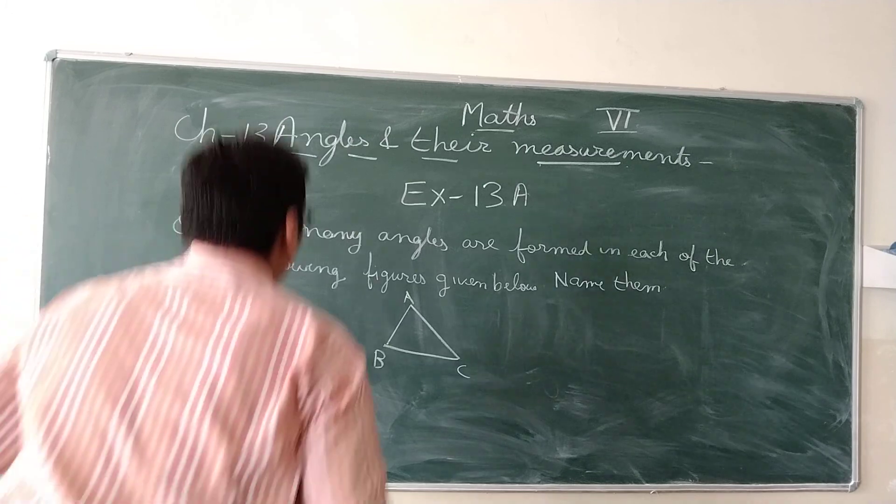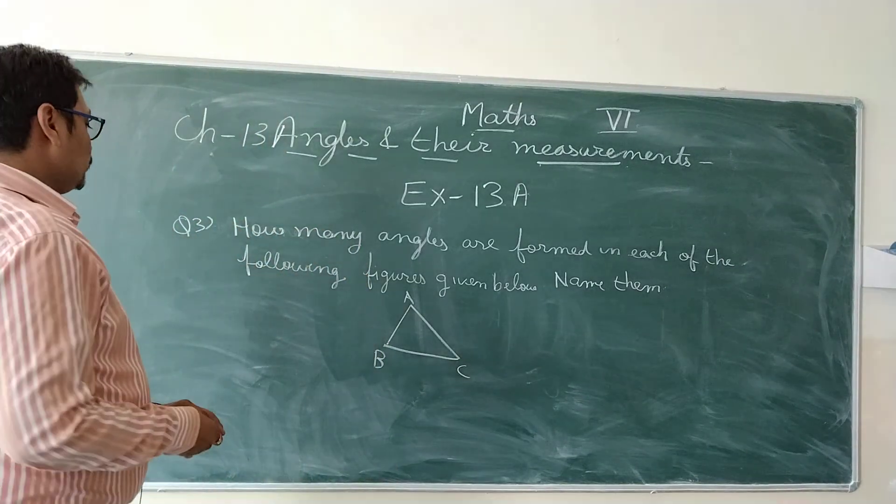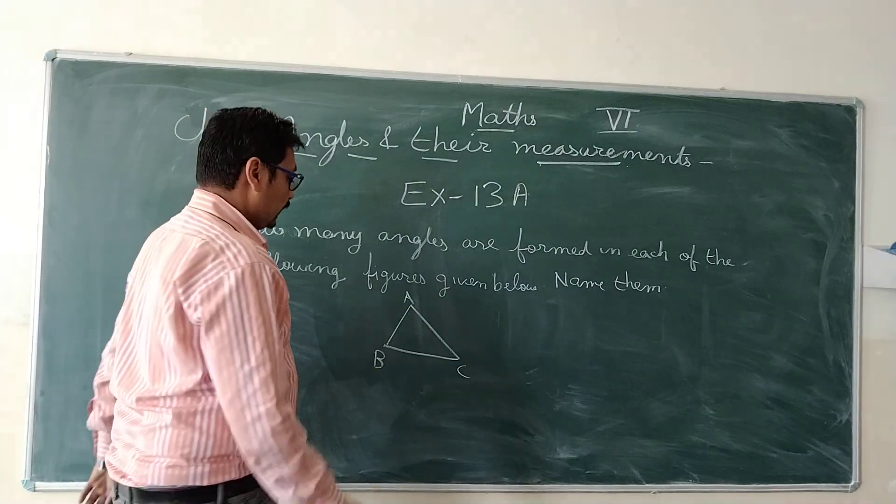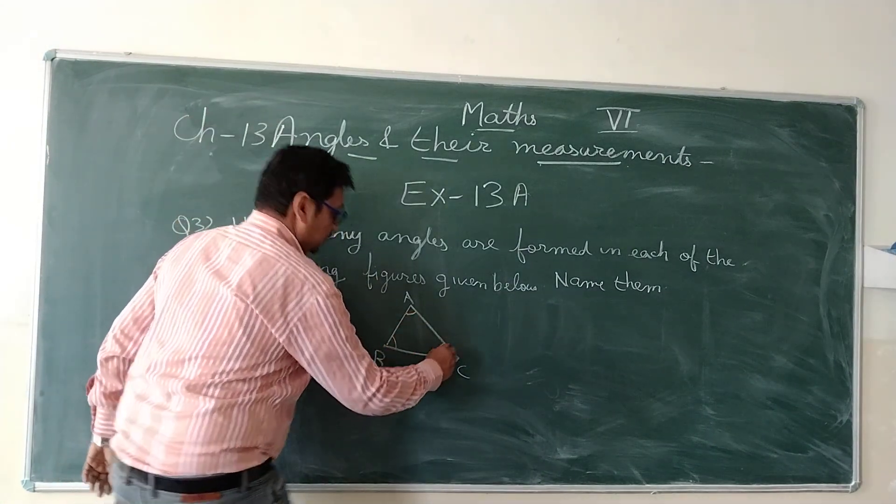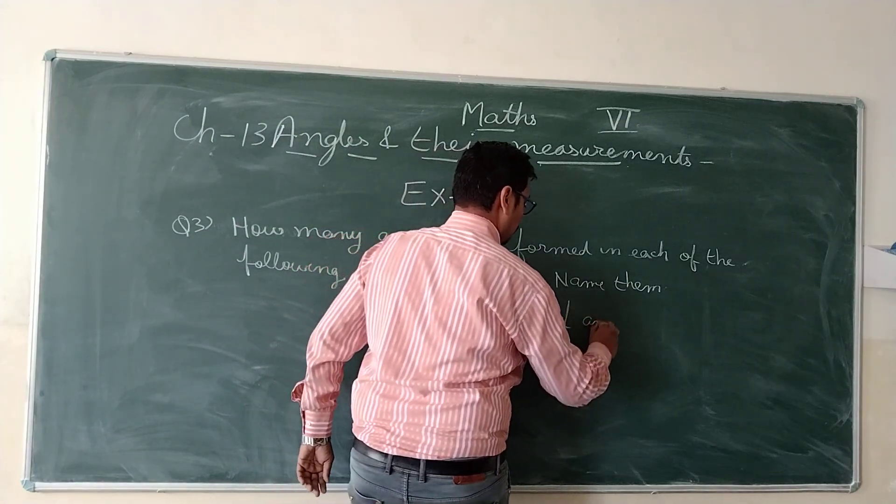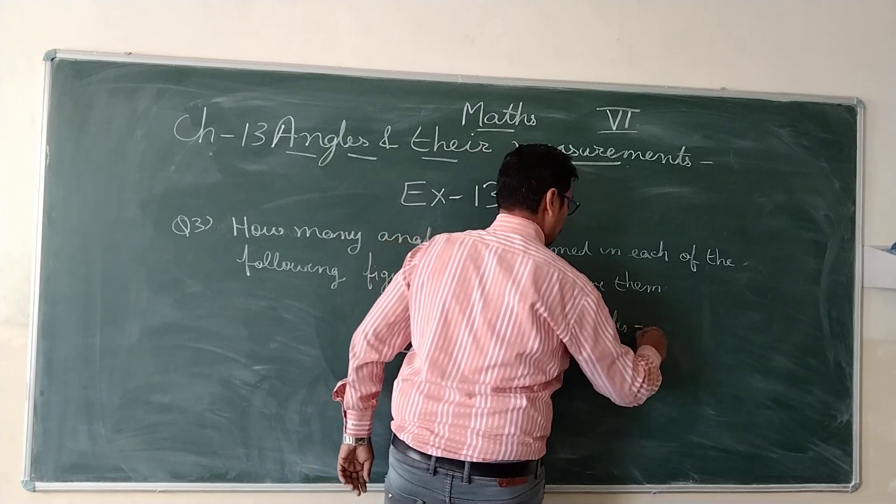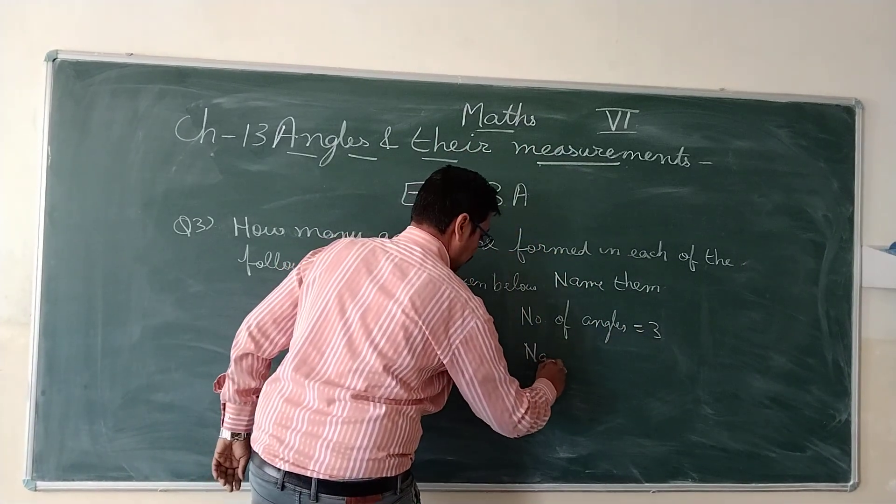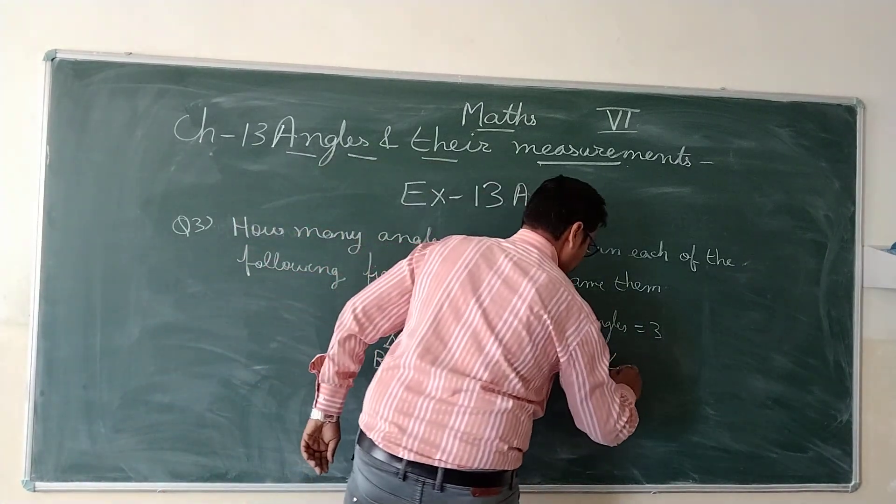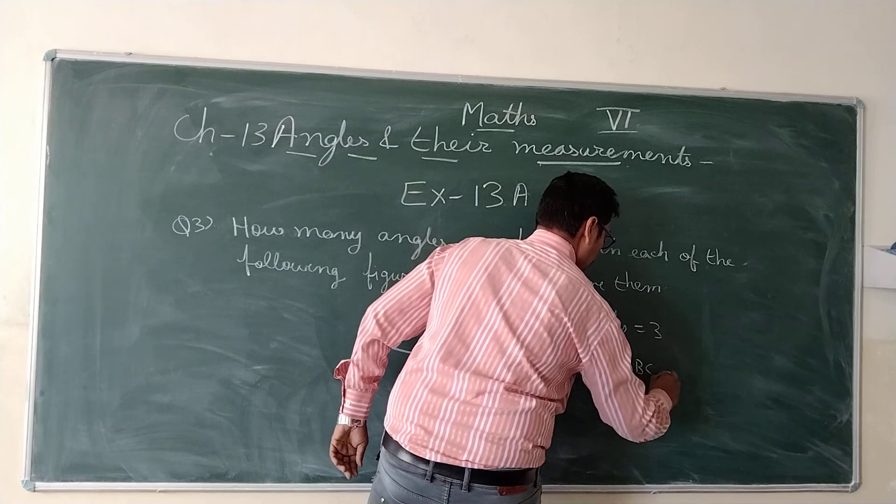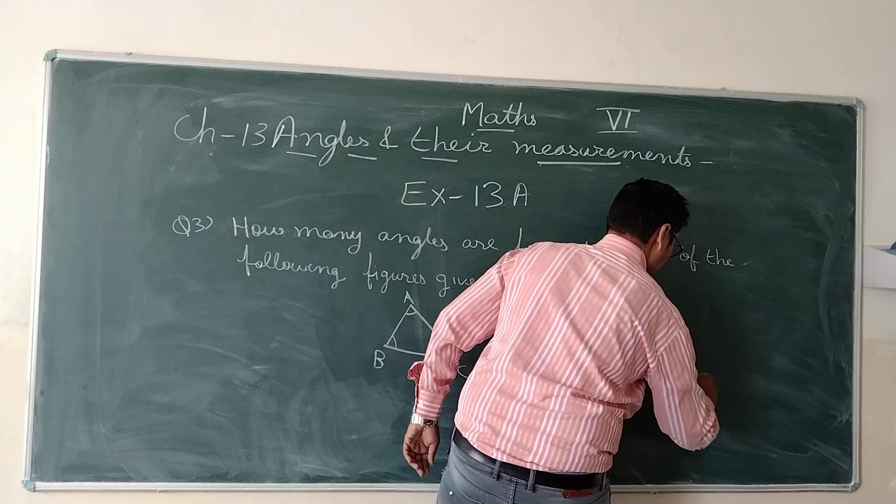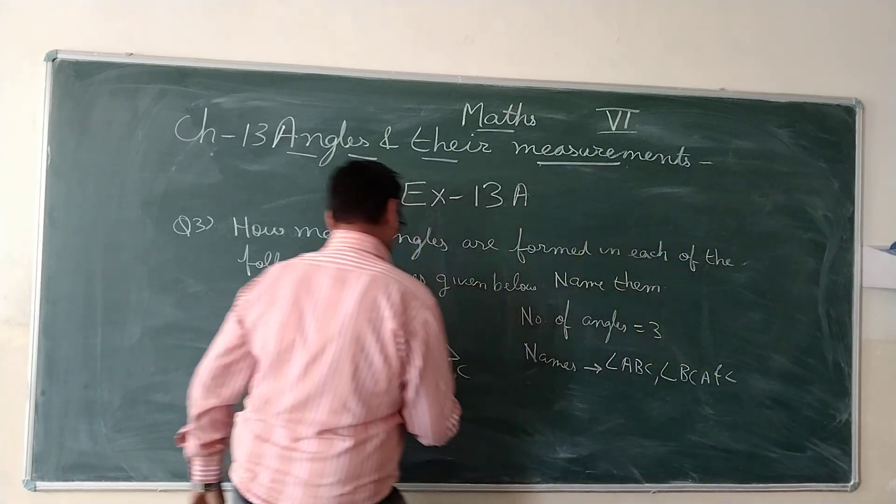Question number 3. How many angles are formed in each of the following figures given below? Name them. So when we look at this figure, we are having one, two and three angles. So number of angles are and their name are angle ABC, angle BCA, angle CAB.